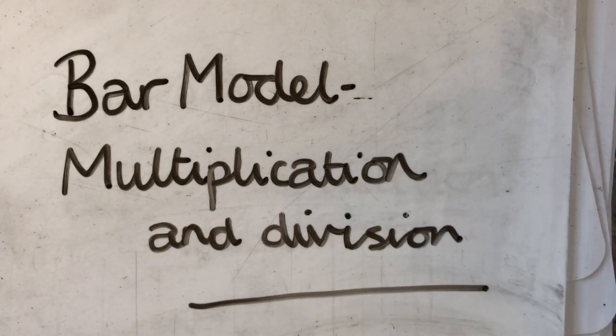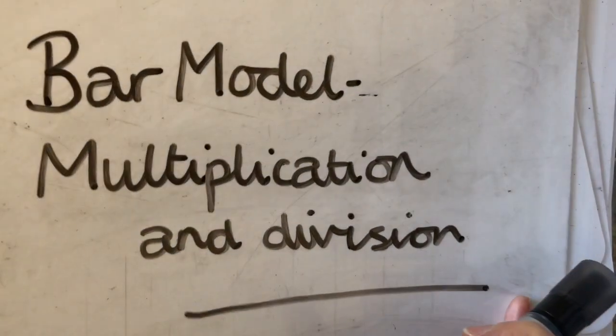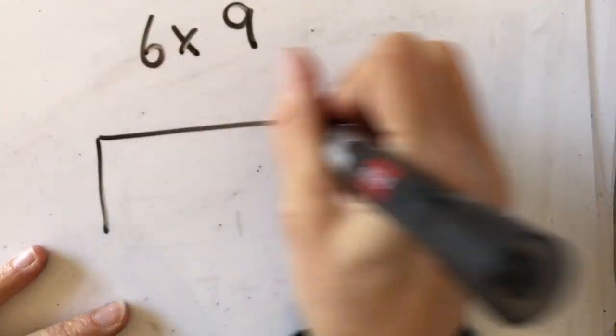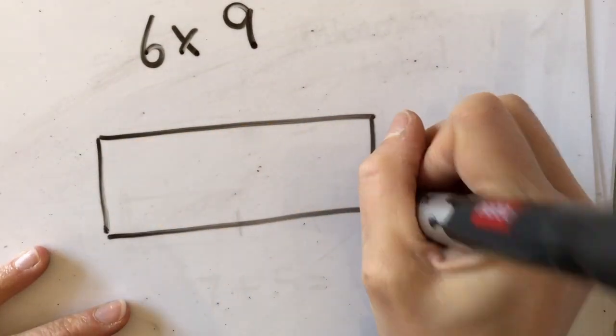Let me look at how we use the bar model for multiplication and division. Starting with the calculation 6 times 9. If I was to draw that in a bar, I use the same bar as I would for addition and subtraction.